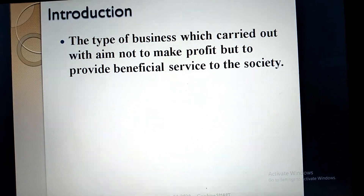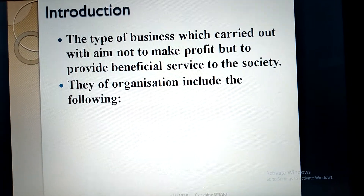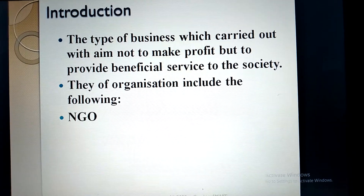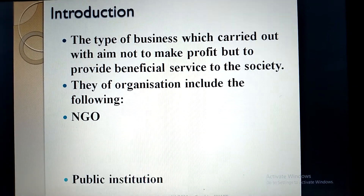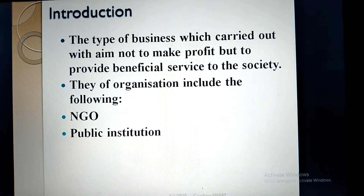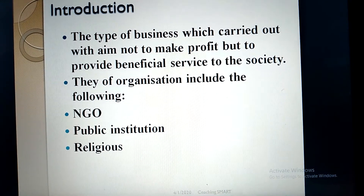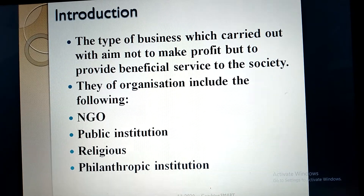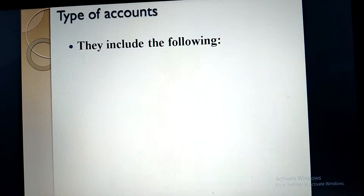Remember: trading means making profit; non-trading means no profit. The types of organization include NGOs (non-government organizations) like the UN and Red Cross, public institutions like high schools, primary schools, universities, religious institutions, and philanthropic institutions. These are the types of organizations falling under non-trading organizations.